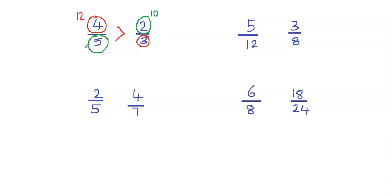The way we read it is from left to right or from right to left. If I read it from left to right, this would be 4 fifths is greater than 2 thirds. If I read it from right to left, this would be 2 thirds is smaller than 4 fifths.